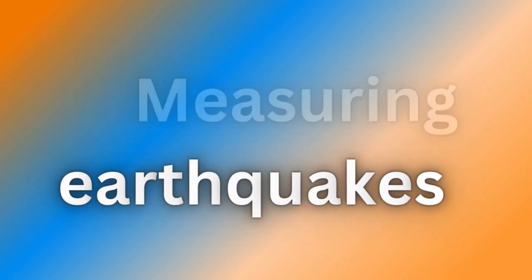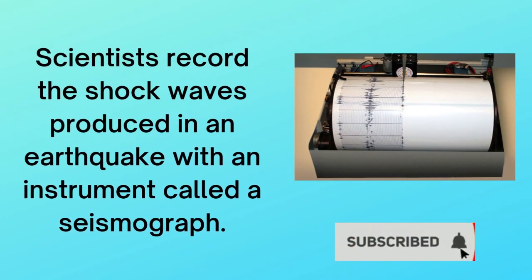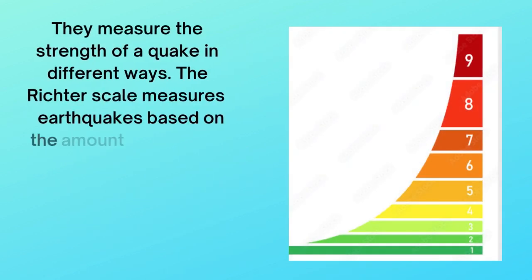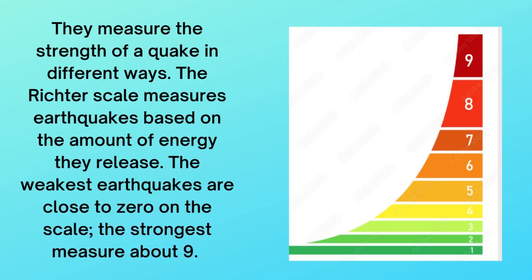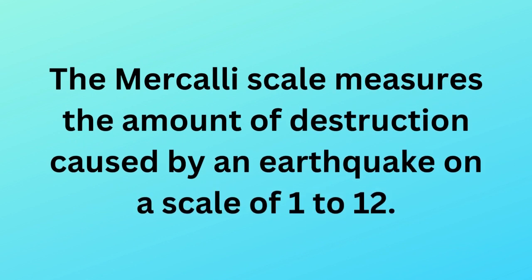Measuring earthquakes. Scientists record the shock waves produced in an earthquake with an instrument called the seismograph. They measure the strength of a quake in different ways. The Richter scale measures earthquakes based on the amount of energy they release. The weakest earthquakes are close to zero on the scale, and the strongest measure about 9. The Mercalli scale measures the amount of destruction caused by an earthquake on a scale of 1 to 12.